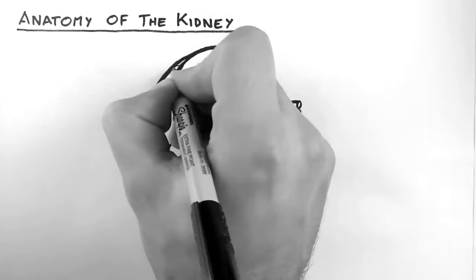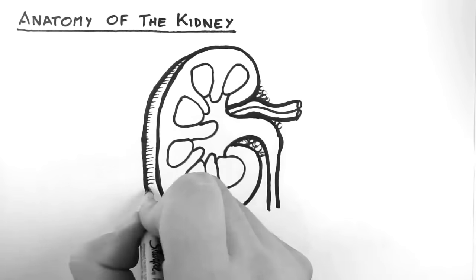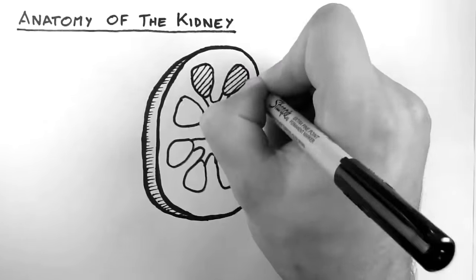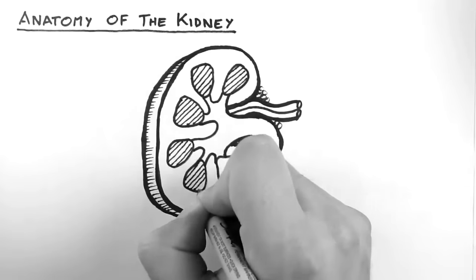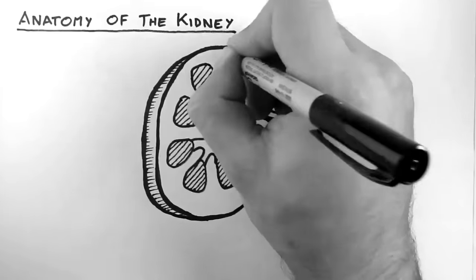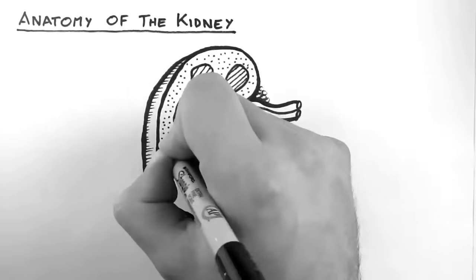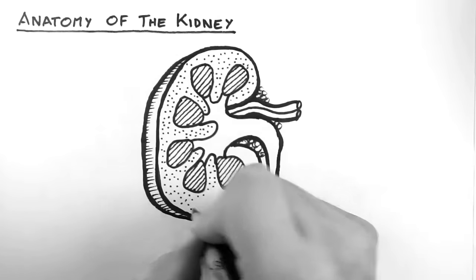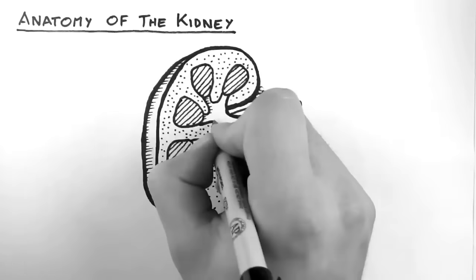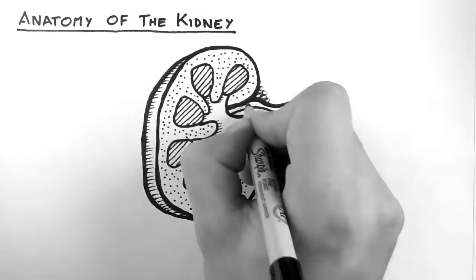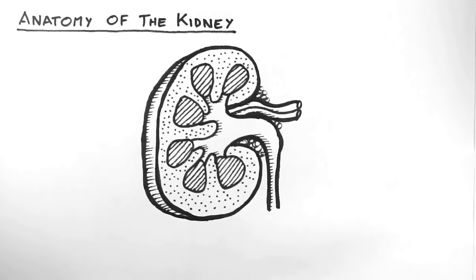So first of all, I'm going to draw a kidney that's been cut in half, so we can see the structures within the kidney. Let's start from the outside moving inward.